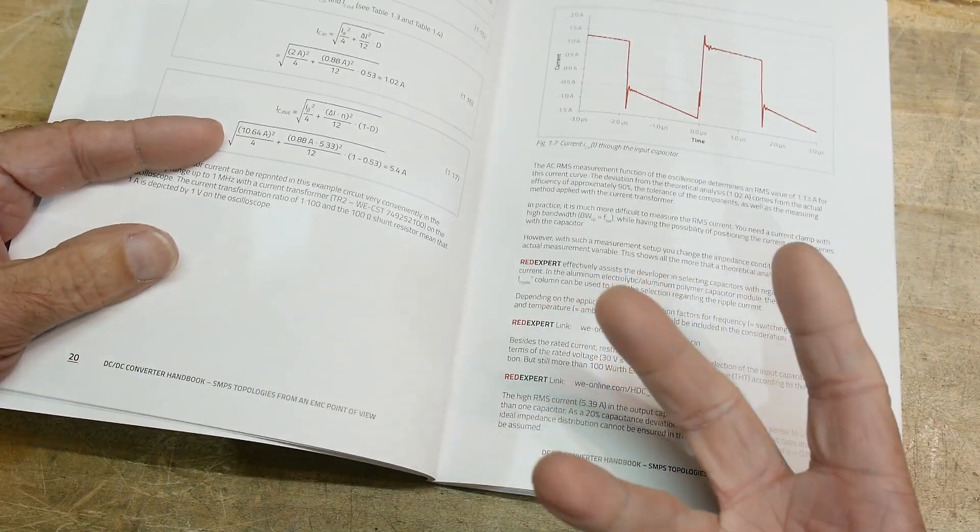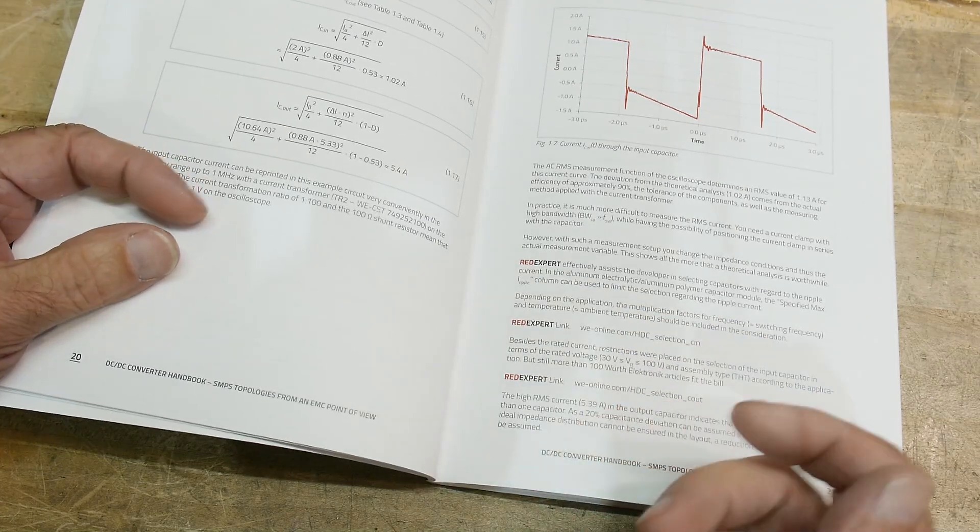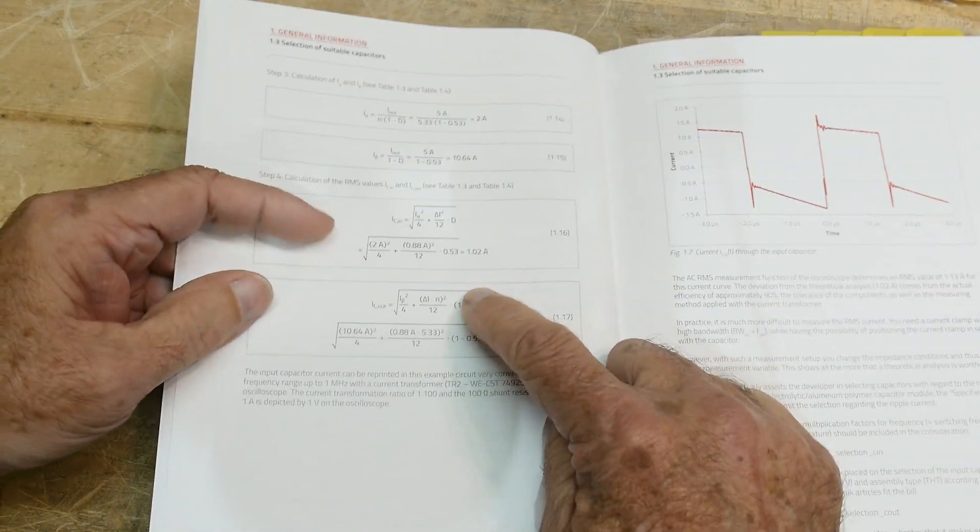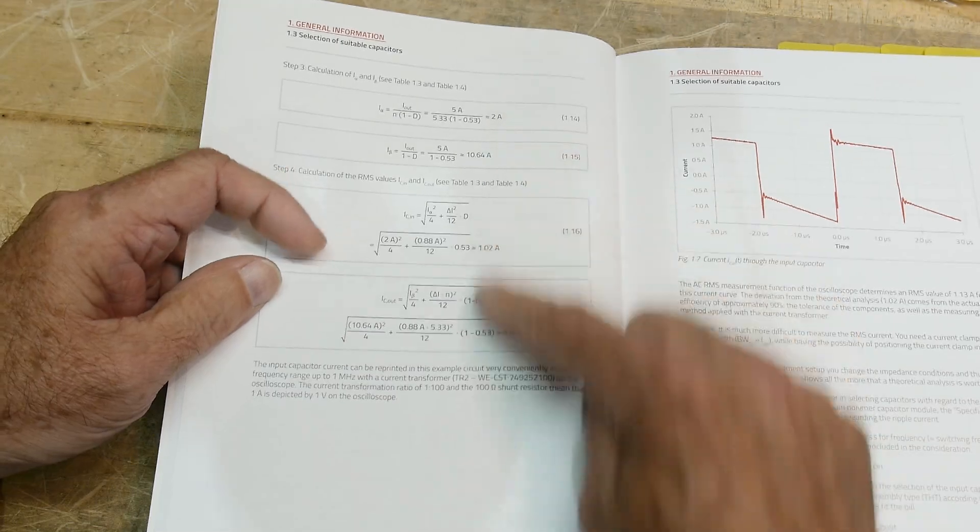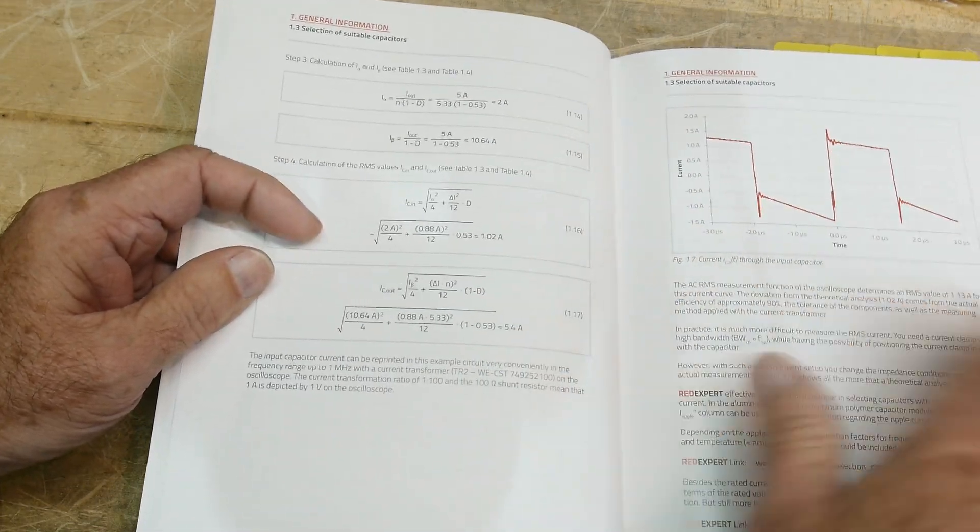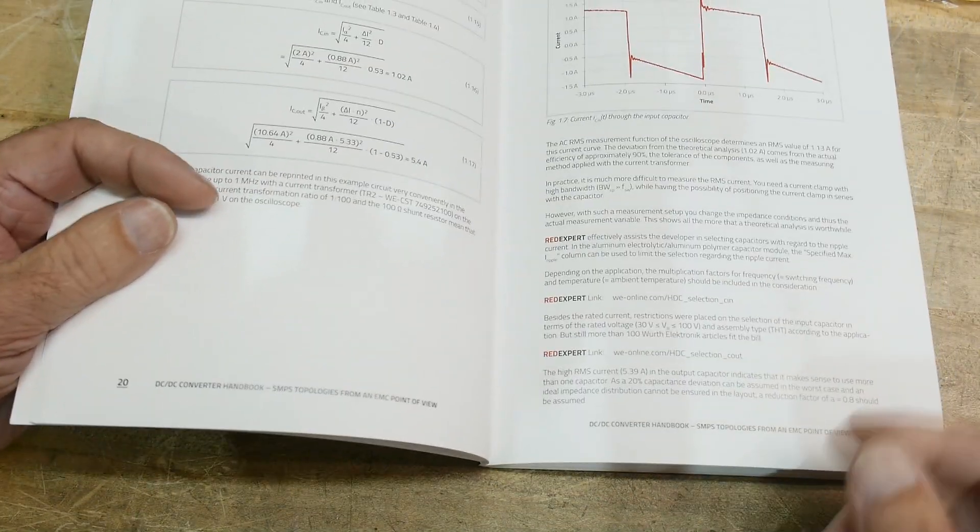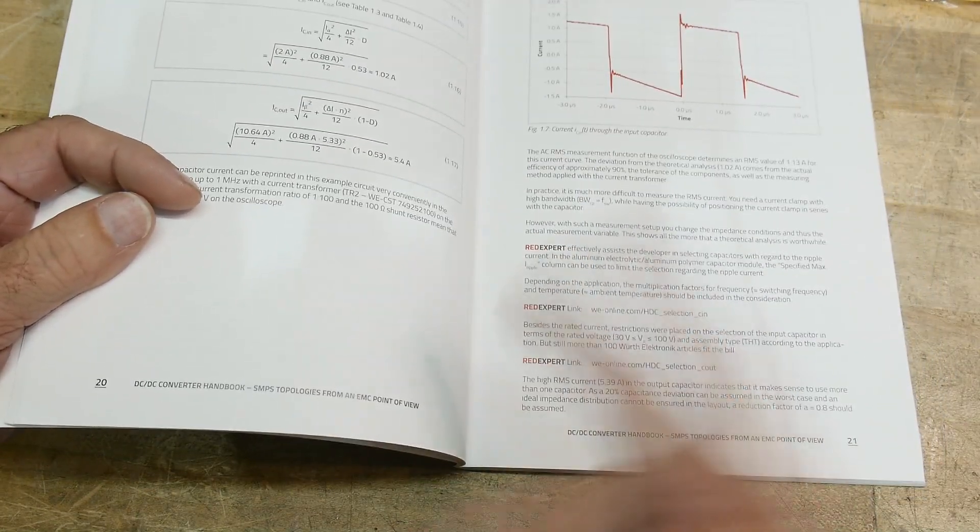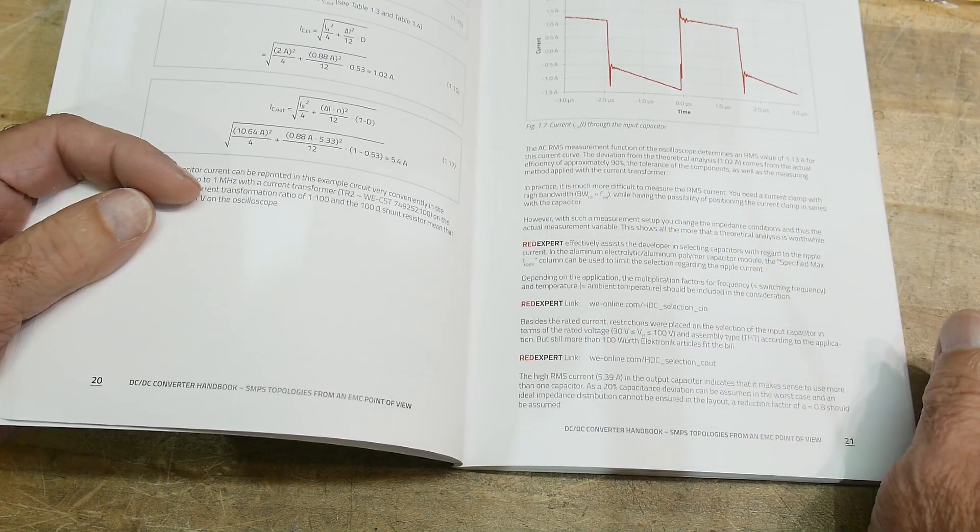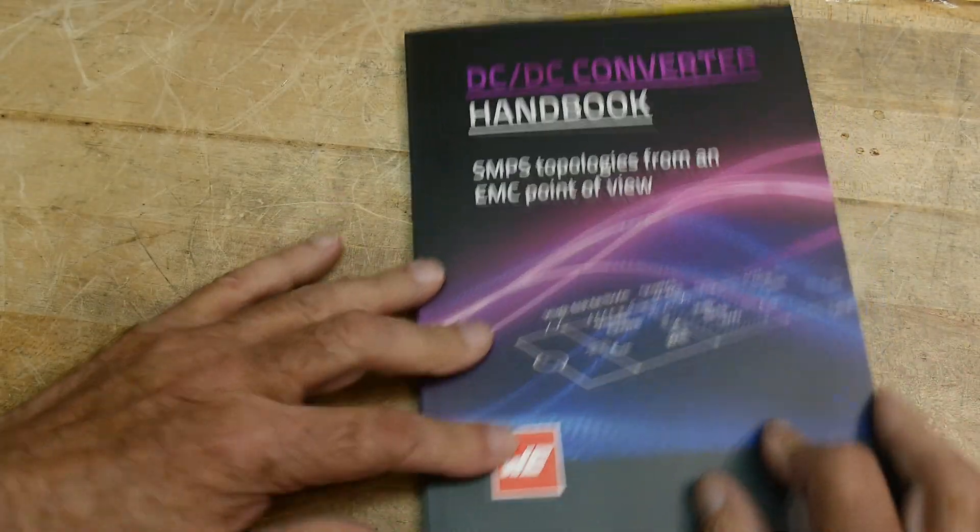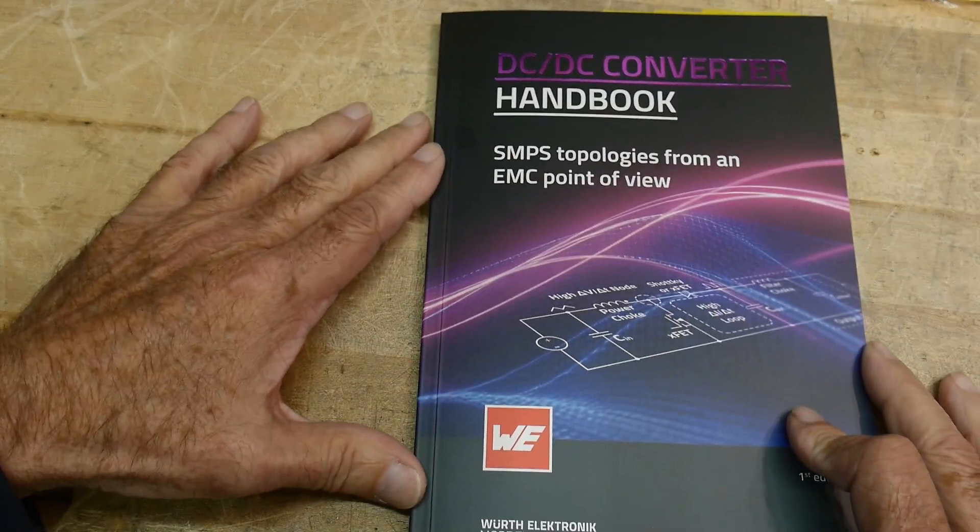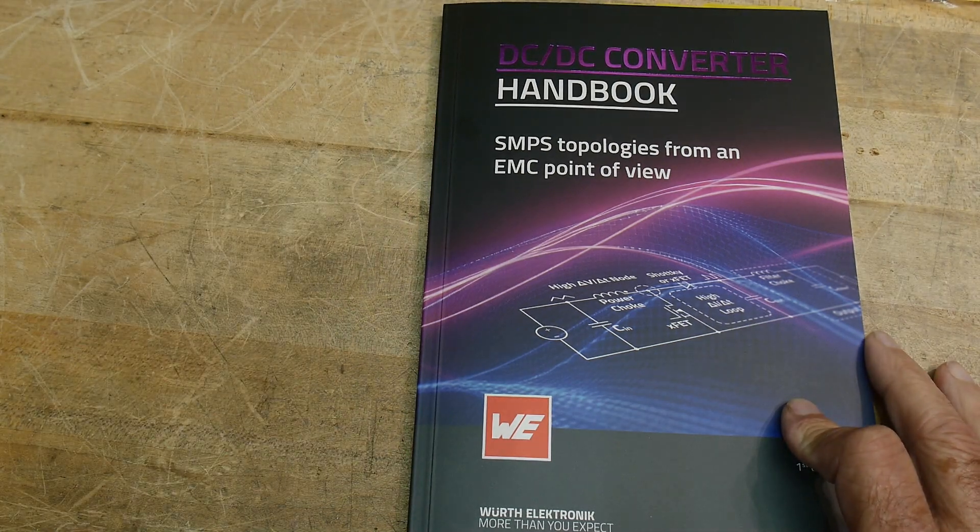So it's kind of a weird catch 22. You can buy the book, use the formulas, write your own Excel spreadsheets or whatever. It does have everything kind of concise in here. It's a terse book. If you want to do this Red Expert thing, you probably don't need the book. So anyway, there you go. That is my review of the DC to DC converter handbook.